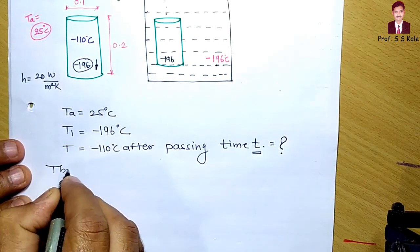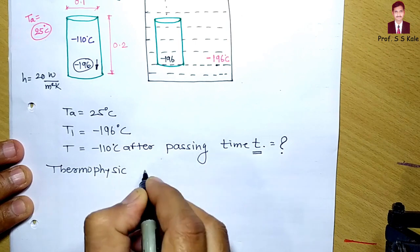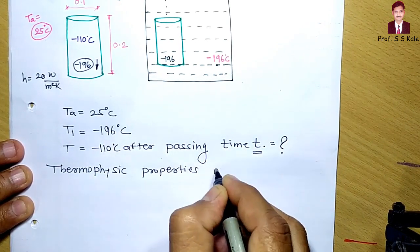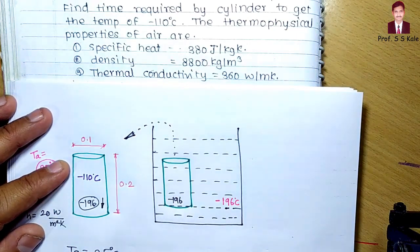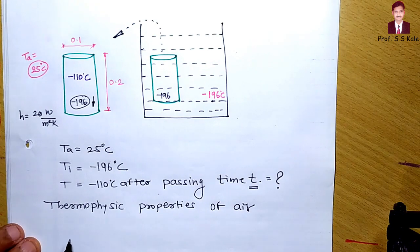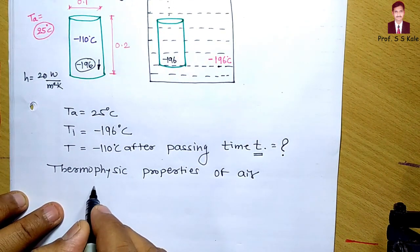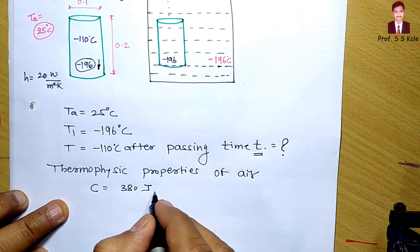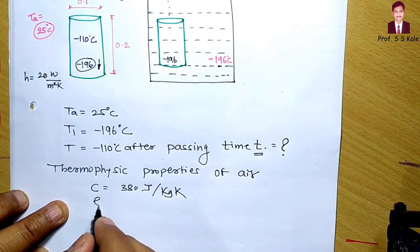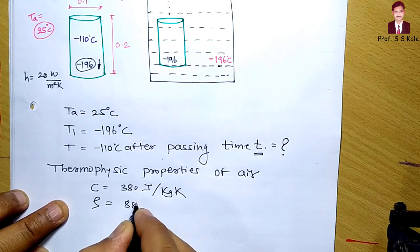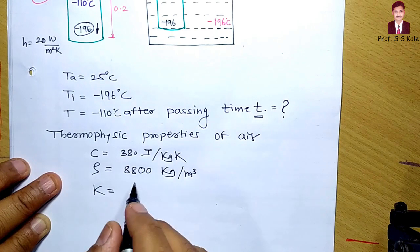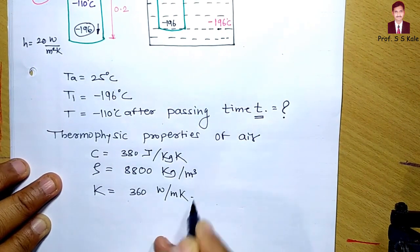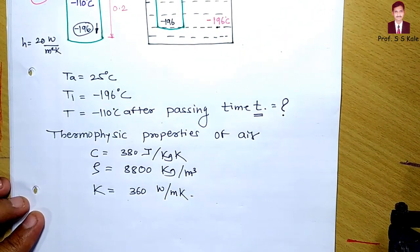For solving this, we also need the thermophysical properties of the copper cylinder, which are given in the problem: specific heat c = 380 J/kg·K, density ρ = 8800 kg/m³, and thermal conductivity k = 360 W/m·K.